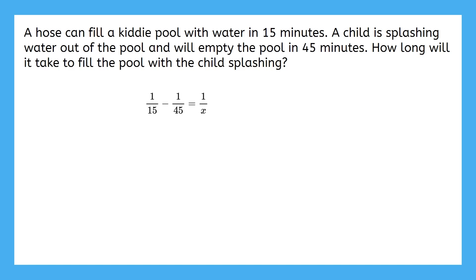Okay, let's finish this together so you can see how you did. The LCM of 15, 45, and x is 45x. So multiply each term by that. Then simplify each fraction, combine like terms, and divide. And 22.5 is not extraneous, so we move on to the most important part. What does 22.5 mean?